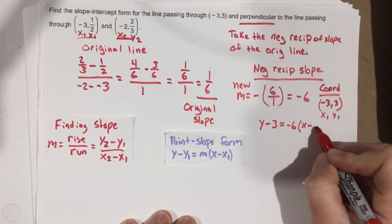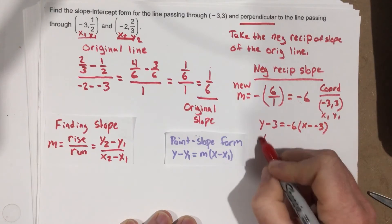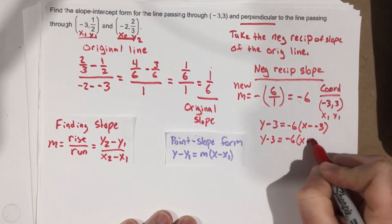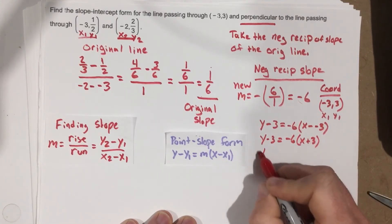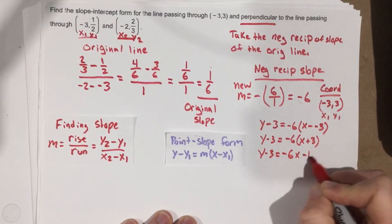x minus negative 3. This becomes a positive, so I get y minus 3 equals negative 6 times (x plus 3). Distribute here, and I get y minus 3 equals negative 6x minus 18.